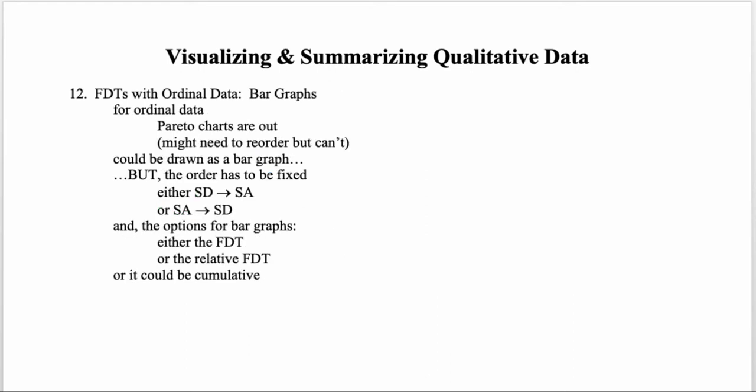For ordinal data, we can't make a Pareto chart because we can't reorder it, but that doesn't mean we can't make a bar graph. The bar graph can be drawn, but it must respect the natural order of the data. The horizontal axis must be presented in order from strongly disagree to strongly agree, or reversed depending on which value you want to emphasize at the beginning.